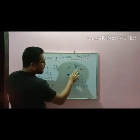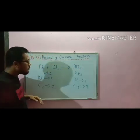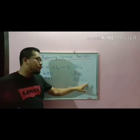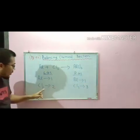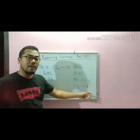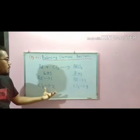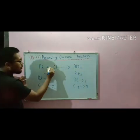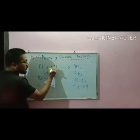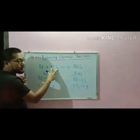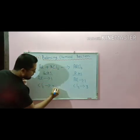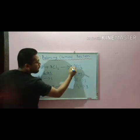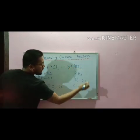Now see — aluminium one, aluminium one: balanced. Chlorine two, chlorine three: not balanced. We have to balance the chlorine part. If we put three on the LHS side, three twos are six. If we put two on the RHS side, two threes are six. Our chlorine is balanced now.